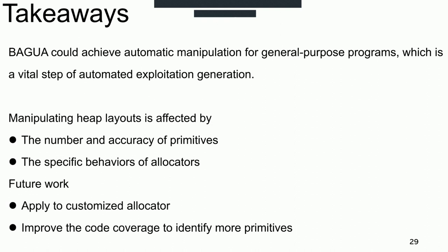Let's talk about our conclusion and our framework, BAGUA, to achieve automatic manipulation for general-purpose programs, which is a key step of automated exploit generation. To facilitate the automatic exploitation, we still need some following work. We need to apply more allocators, especially for certain customized allocators in applications. Moreover, it is important to improve code coverage to identify more primitives. That's all, thanks for your listening.